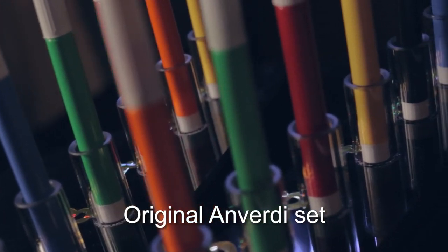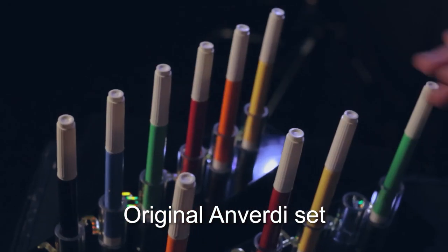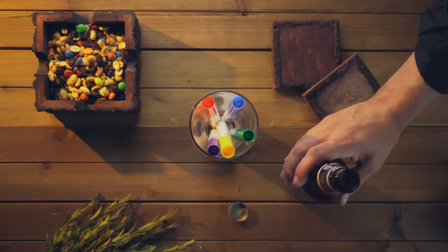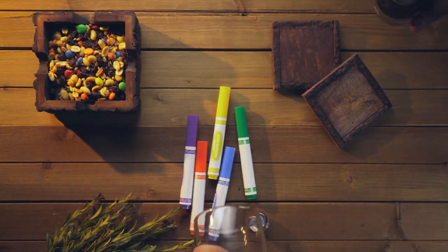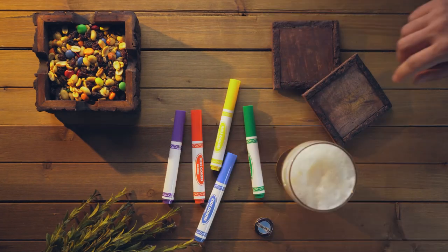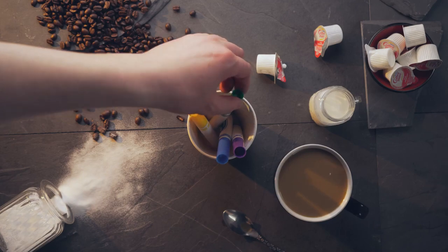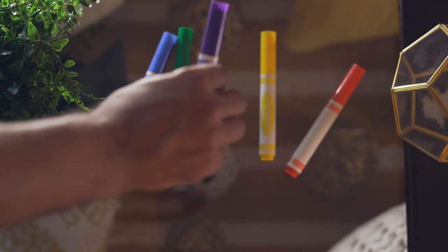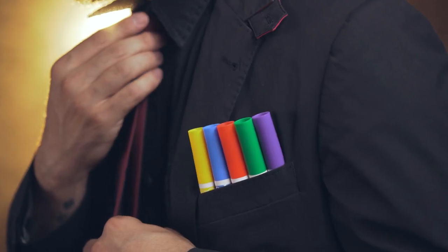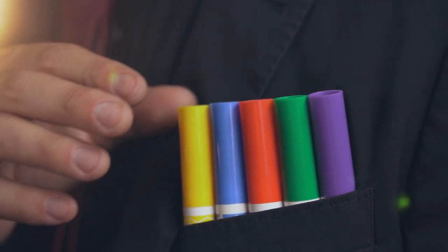In the original Anverde set, the secret hid in the holder. Now, it cleverly hides in the pen. You can use a glass or no glass on any table, any surface, even from a pocket. It molds to your environment.